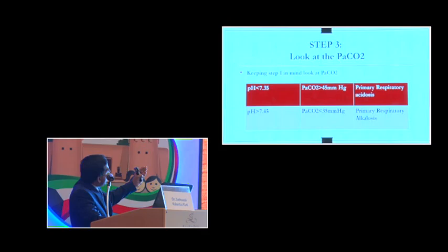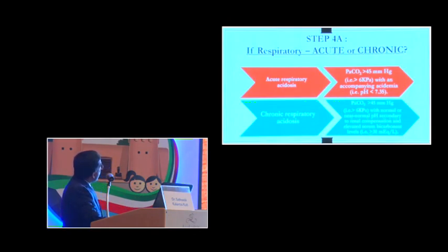Step three: keeping step one in mind, look at PaCO2. If the PaCO2 is more than 45 mmHg and if the pH is less than 7.35, then it is primary respiratory acidosis. If the PaCO2 is less than 35 and if your pH is more than 7.45, it is primary respiratory alkalosis. Now, if it is respiratory, is it an acute disorder or chronic? In acute states, the PaCO2 will be more than 45 or more than 6 kilopascal units with accompanying acidemia, the pH less than 7.35. If it is chronic respiratory acidosis, then PaCO2 will be more than 45 mmHg with a normal or near-normal pH secondary to renal compensation and an elevated serum bicarbonate.